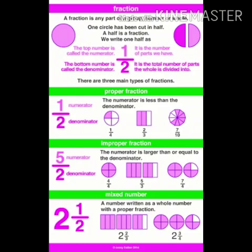The third type of fraction is a mixed number — a number written as a whole number with a proper fraction. For example, 2 and 1 by 2, where 2 is a whole number and 1 by 2 is a proper fraction.